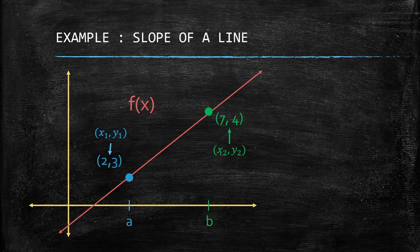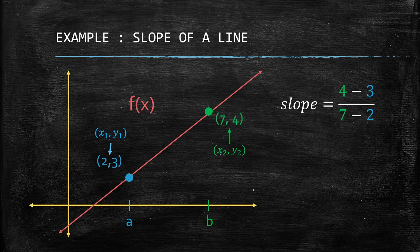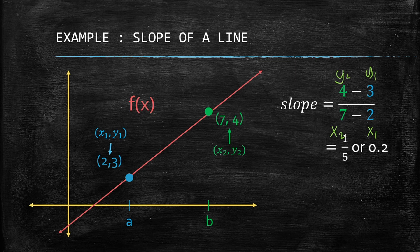We identify x₁ = 2, y₁ = 3 for point 1, and x₂ = 7, y₂ = 4 for point 2. Substituting into the slope formula, we have y₂ minus y₁ over x₂ minus x₁, which is 4 minus 3 over 7 minus 2. This gives us 1 over 5, or 0.2 in decimal.